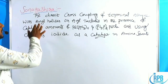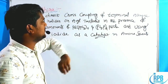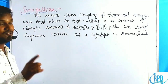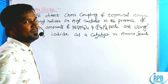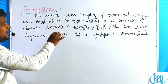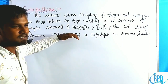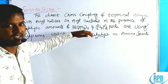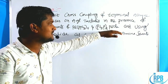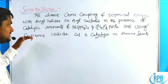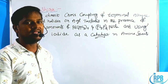The general definition of the Sonogashira cross-coupling reaction is the direct cross coupling of a terminal alkyne with aryl halides or aryl triflates, in the presence of catalytic amounts of Pd(PPh3)4 or PdCl2(PPh3)2, and using cuprous iodide as a co-catalyst.